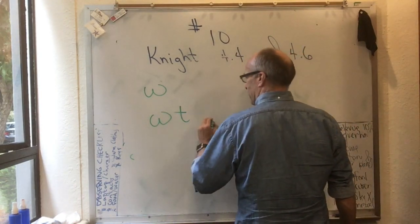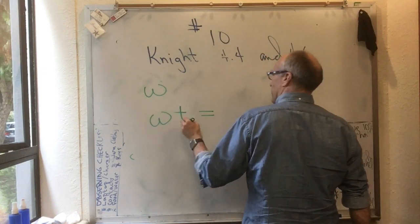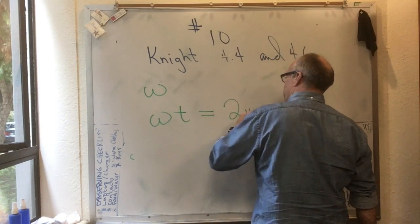And if we set the time t, that angle that it goes in time t, to be equal to a full 2π, we can find out how long it takes to go around once.